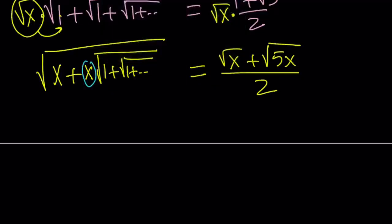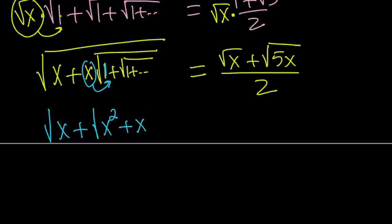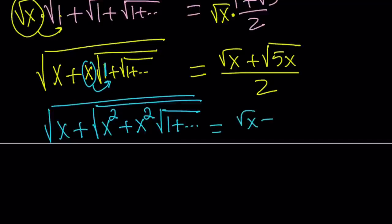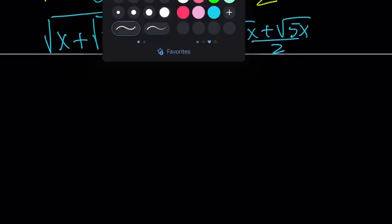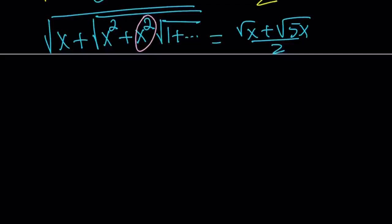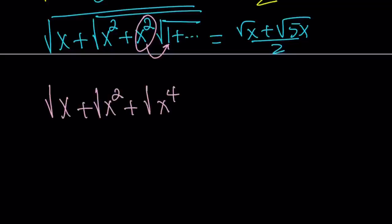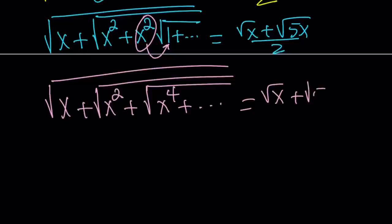Continuing to move each term inside the radical: it becomes the square root of x squared, and since x is positive this simplifies nicely. We get the square root of x plus the square root of x squared, multiplied by 1 plus dot dot dot. Then the x squared gets taken inside, becoming x to the 4th, and so on. So our expression starts looking like: the square root of x plus the square root of x squared plus the square root of x to the 4th plus x to the 8th, x to the 16th, so on and so forth. And this equals the square root of x plus the square root of 5x divided by 2.